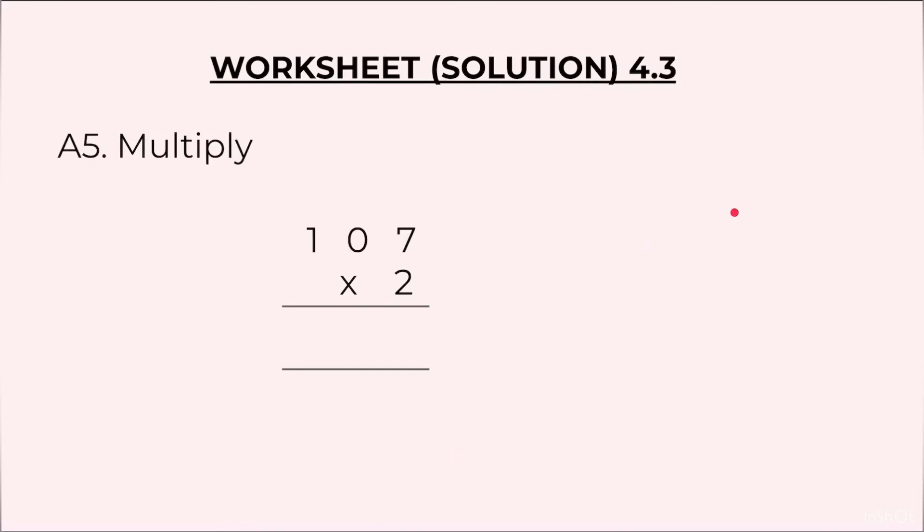Fifth one: 107 into 2. We will start by multiplying 2 by 7. 2 into 7 is 14, 1 at the top, 4 at the bottom. Now 2 into 0. I have seen students make a mistake. Children, 2 into 0 is 0. Sometimes when you are doing a question in a flow, you tend to write 2 into 0, 2. Please be careful of that. 2 into 0 is 0 and plus 1 is 1. 2 ones are 2. The final answer is 214.